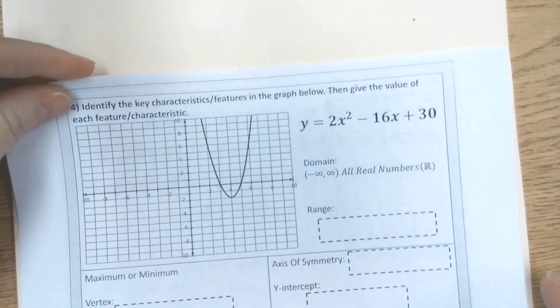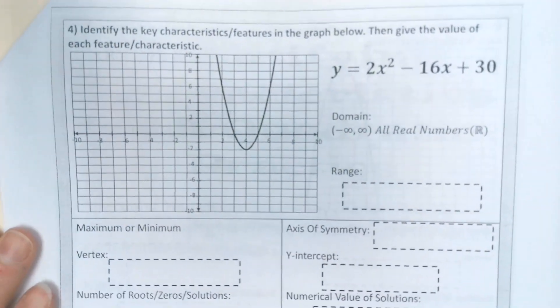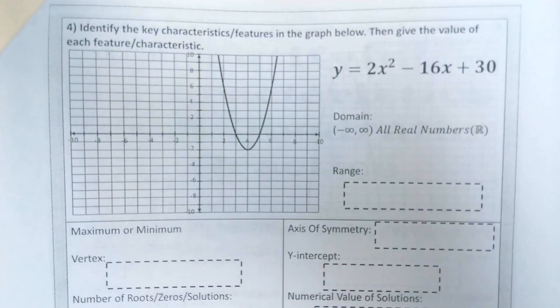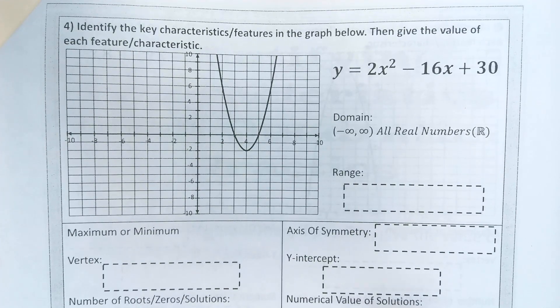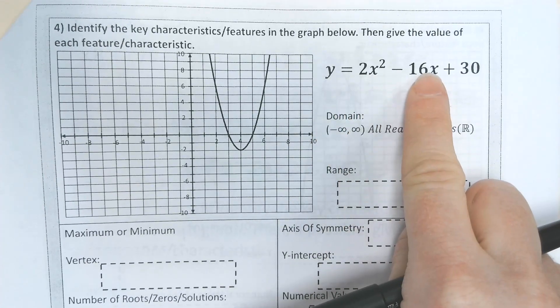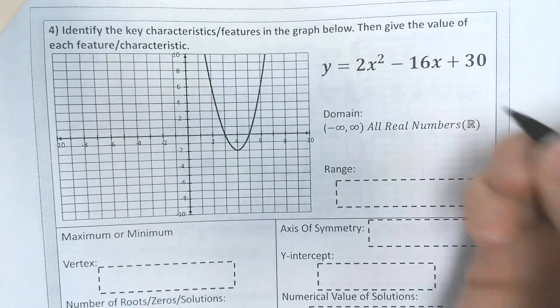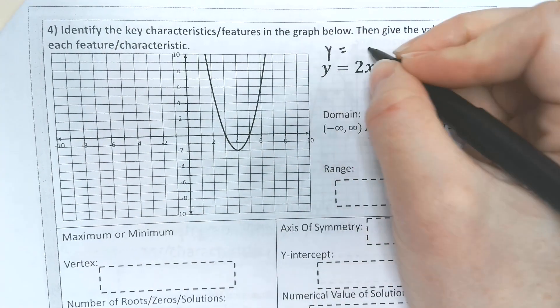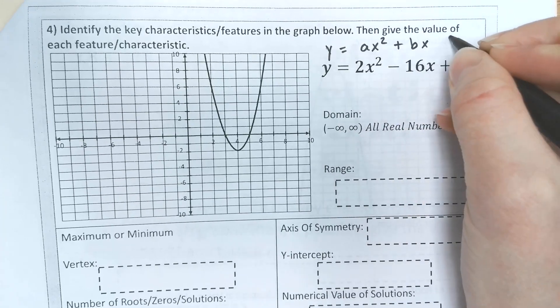Let's go ahead and look at number four. Identify the key characteristics features of the graph below then give the value of each feature characteristic. Here's our function y equals 2x squared minus 16x plus 30. This is in standard form y equals ax squared plus bx plus c.